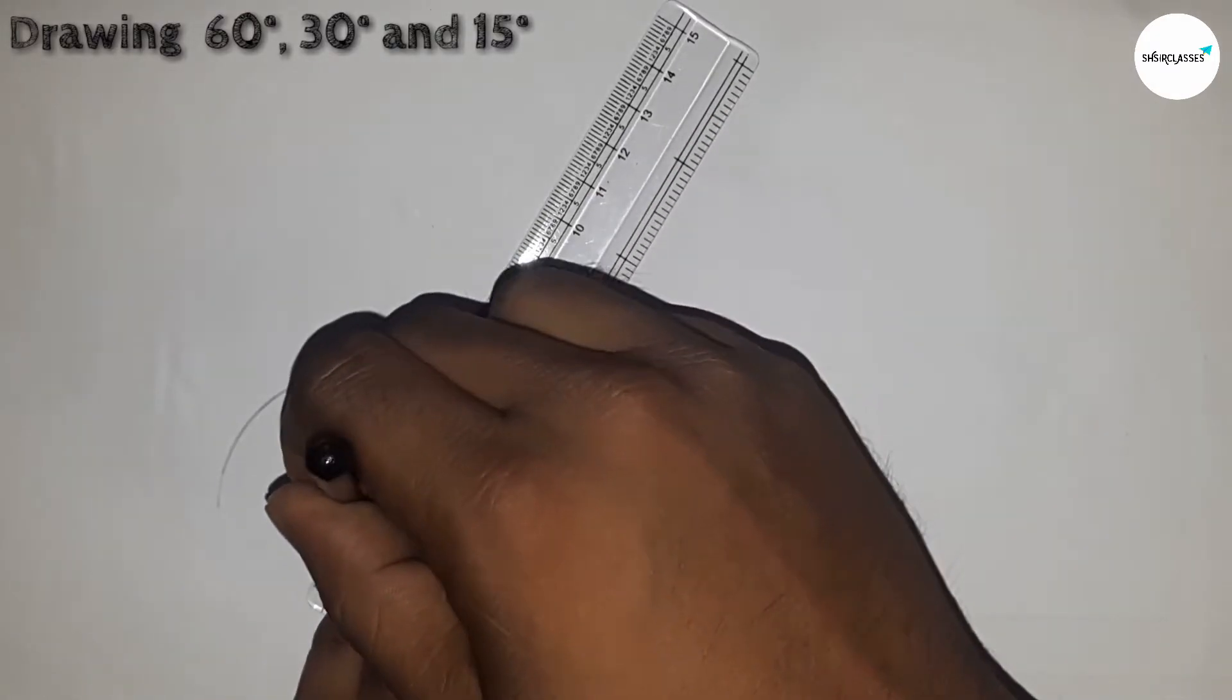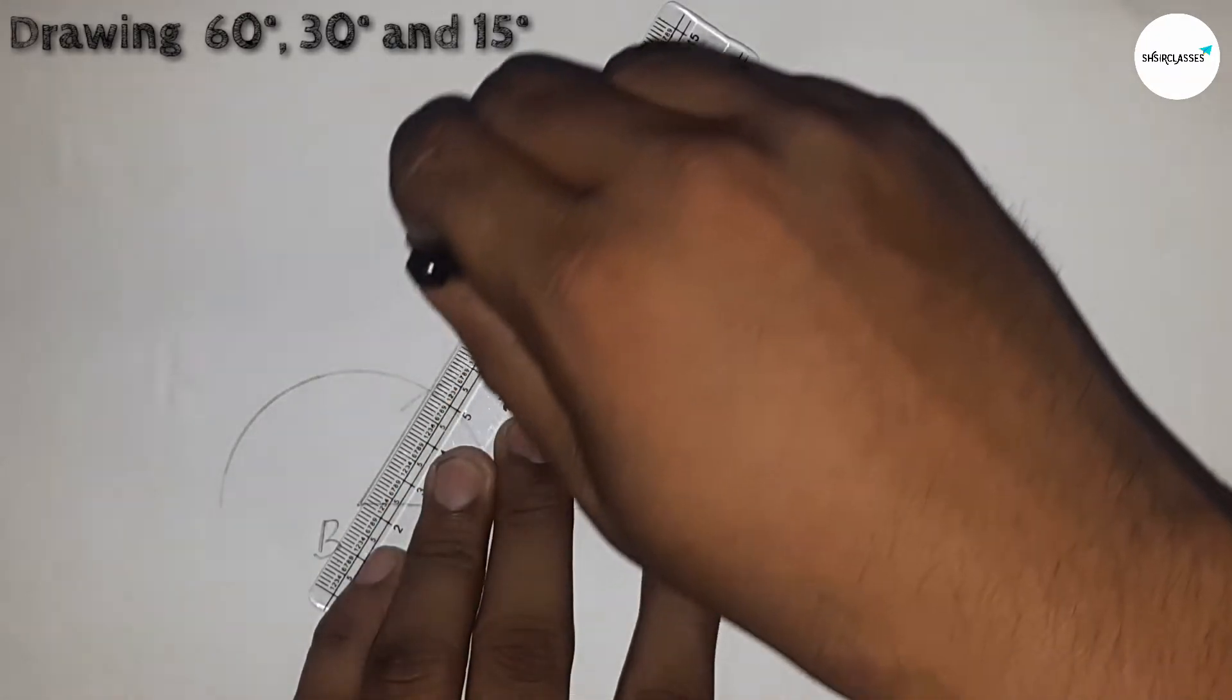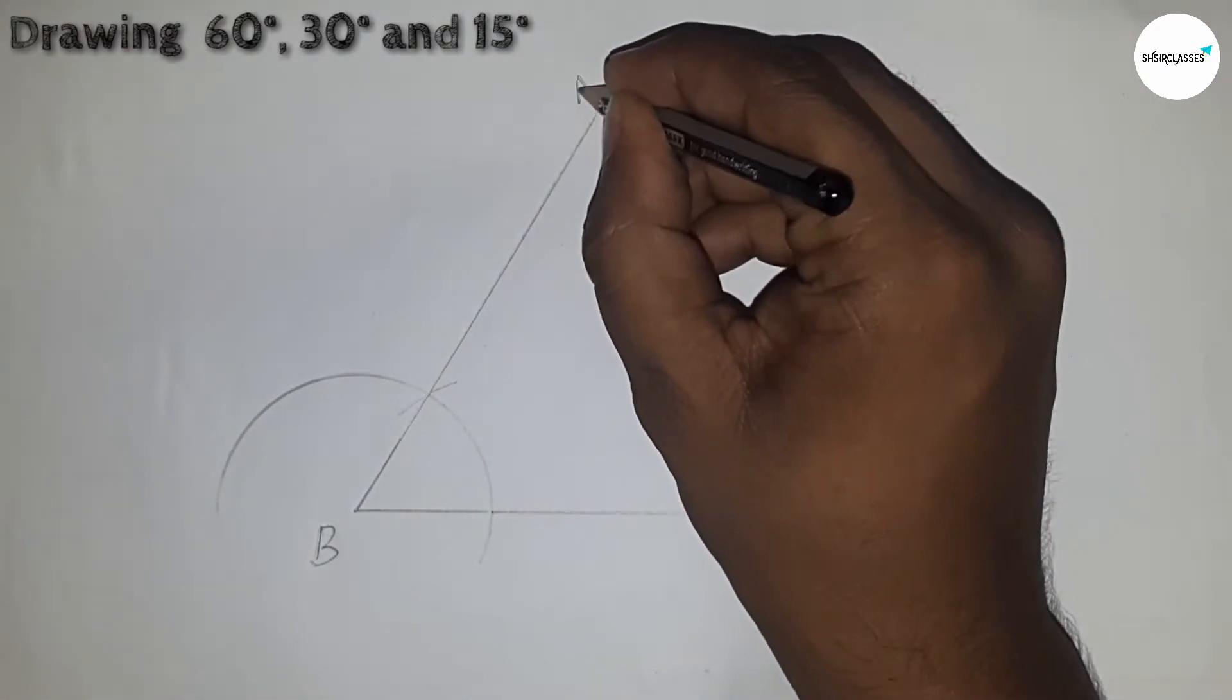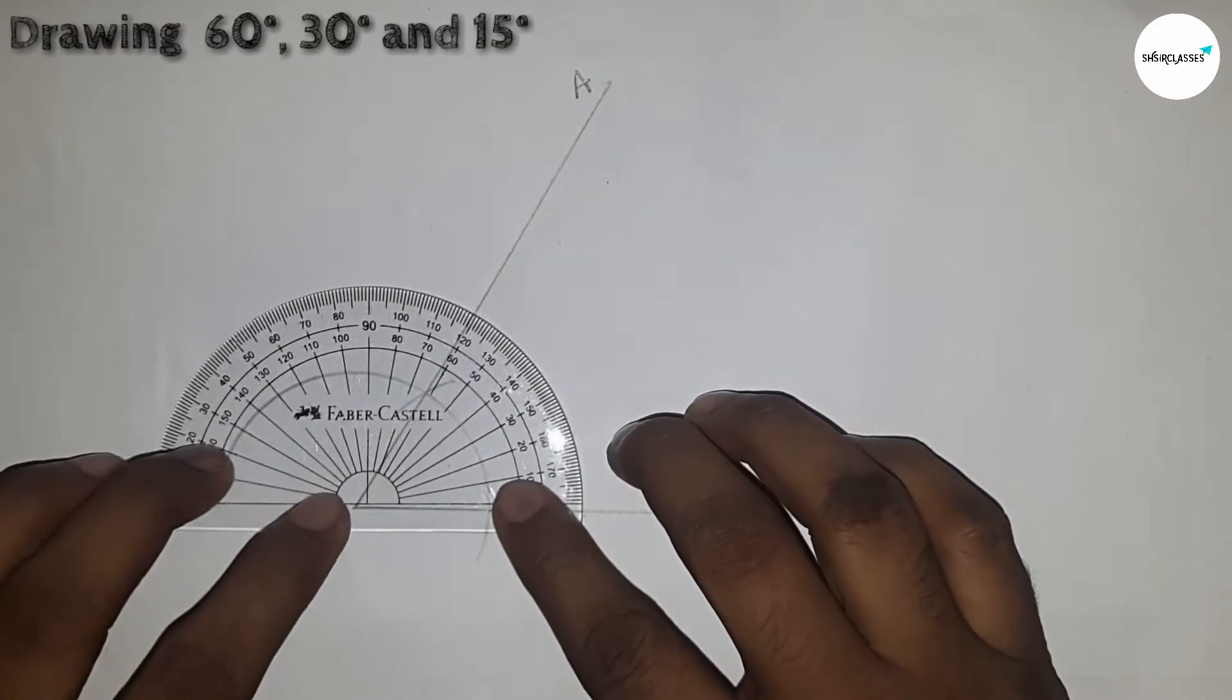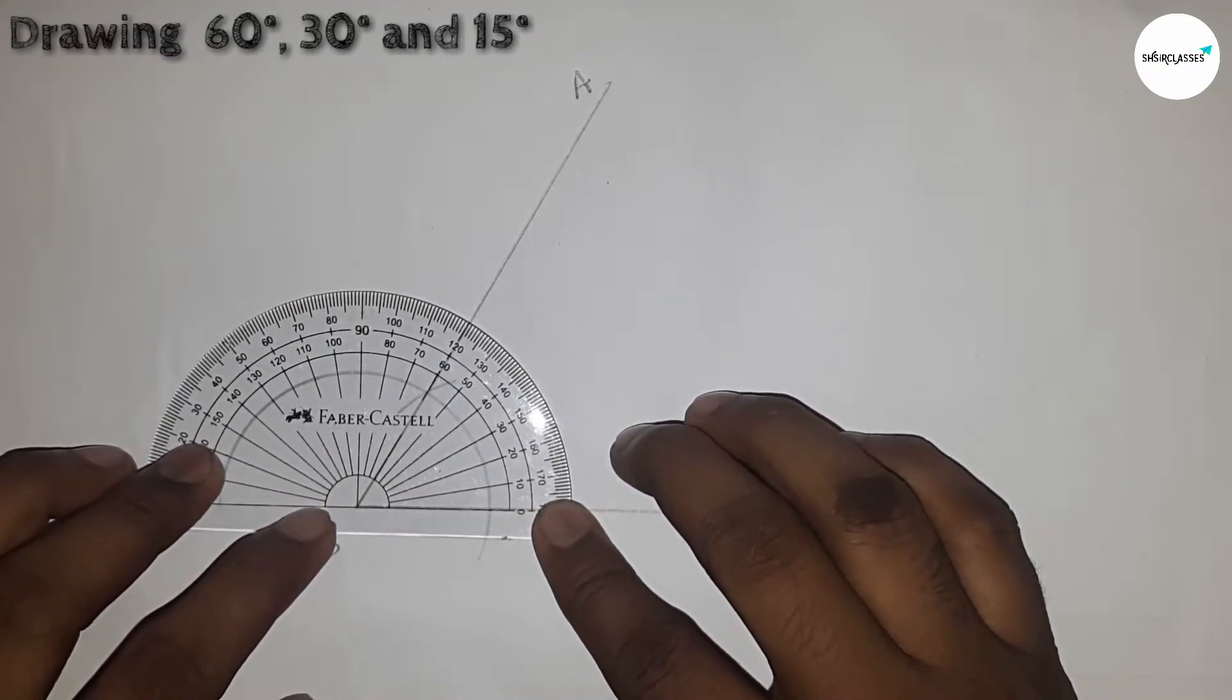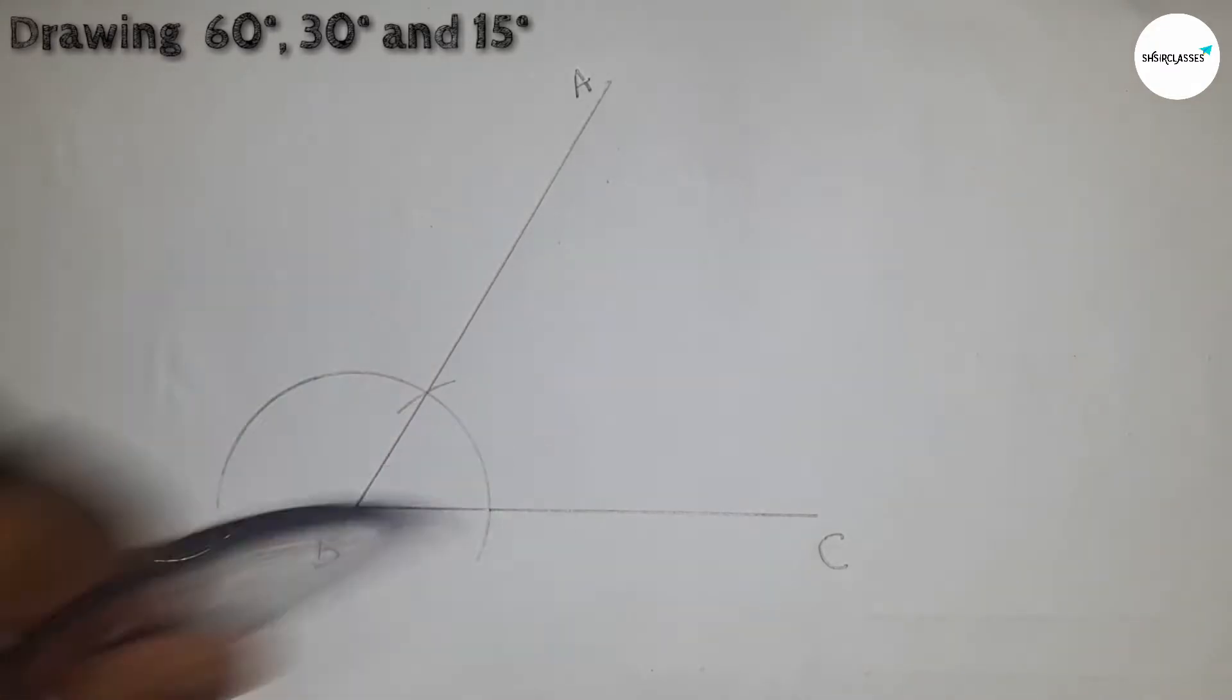Now joining these two points. This is A point. Now checking whether it is 60 or not. It is 60 degree angle perfectly.